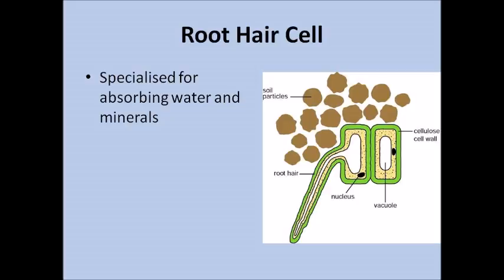Root hair cells are also in plants. Many students think these are in animals because they're called hair cells, but they are actually in plants. They're specialised for absorbing water and minerals and are just part of the root. They are tiny projections on the surface of the root, which increases the surface area so the root can absorb as much minerals and water as possible.